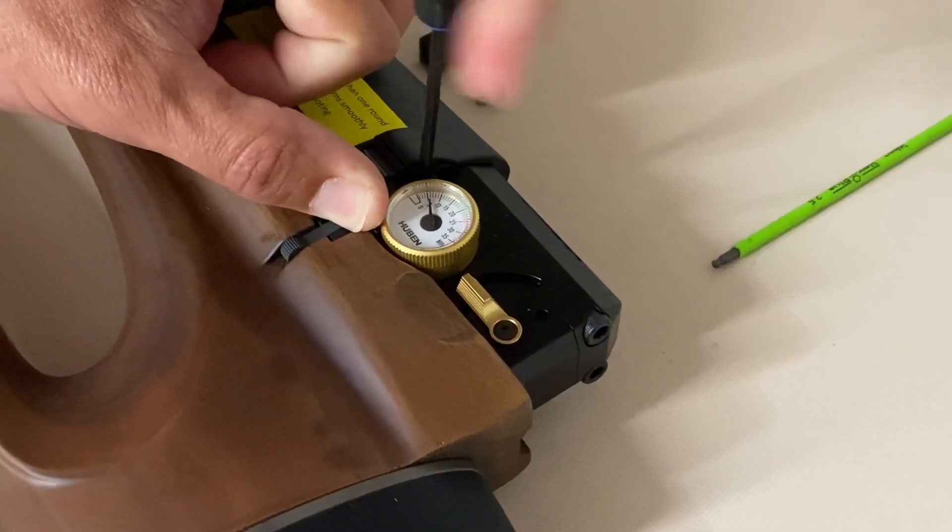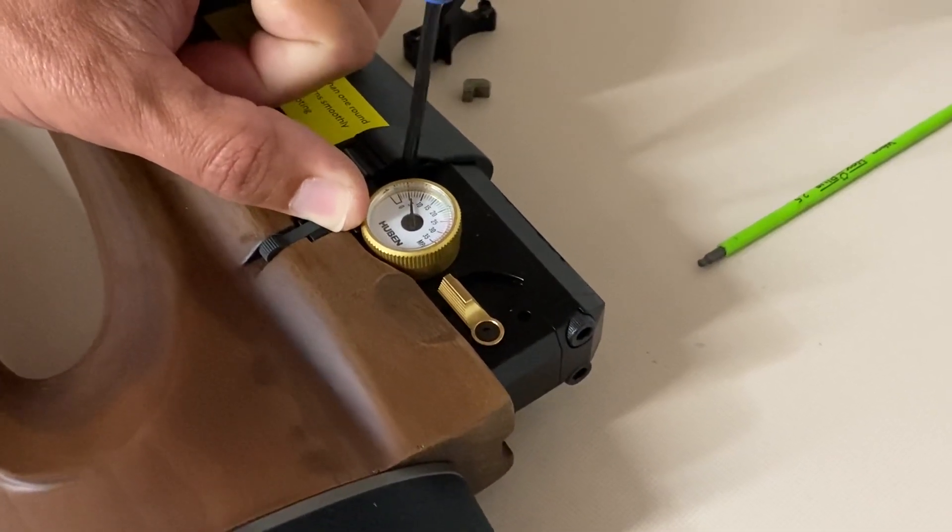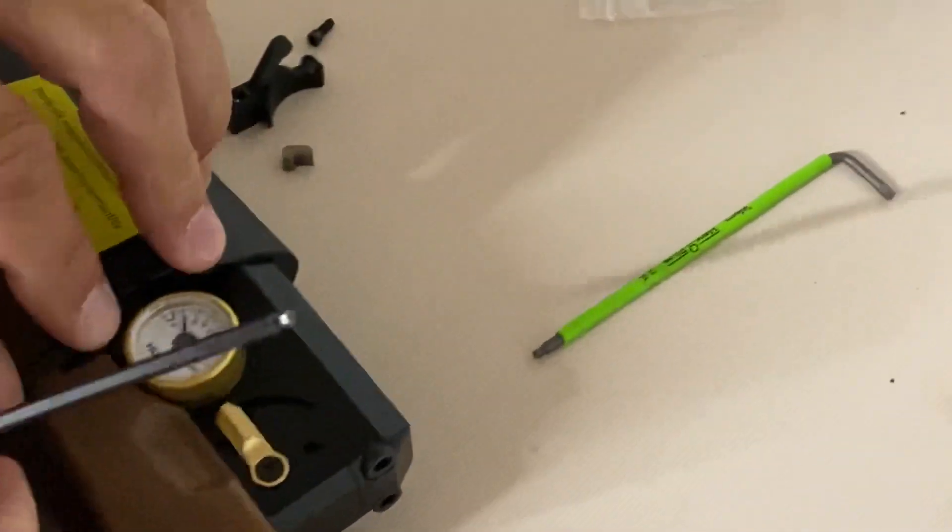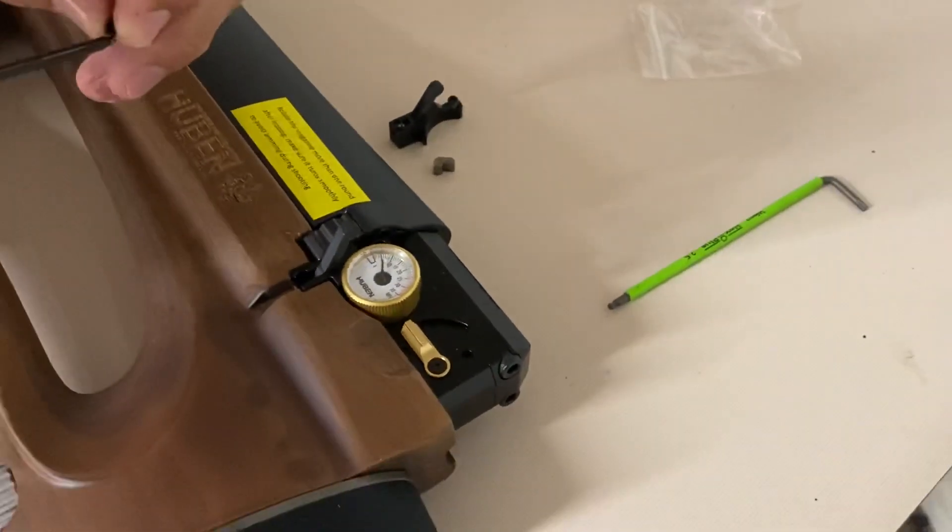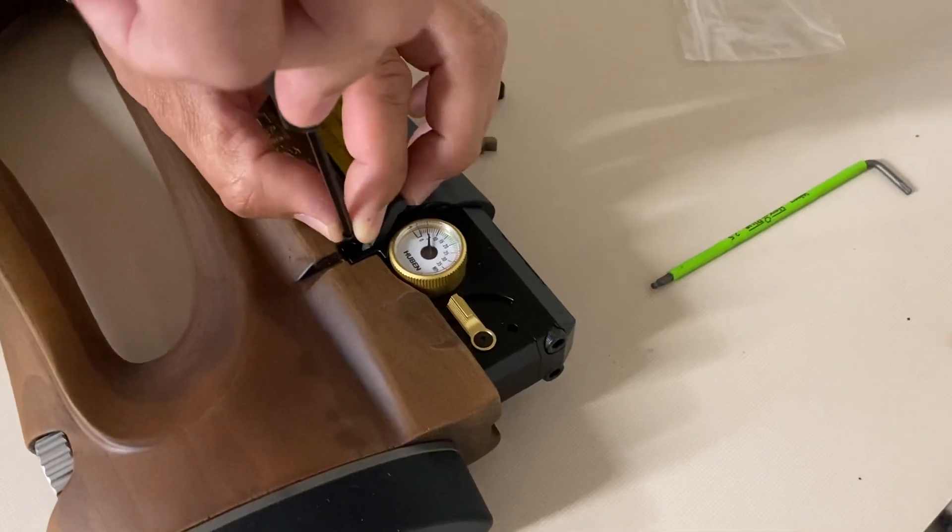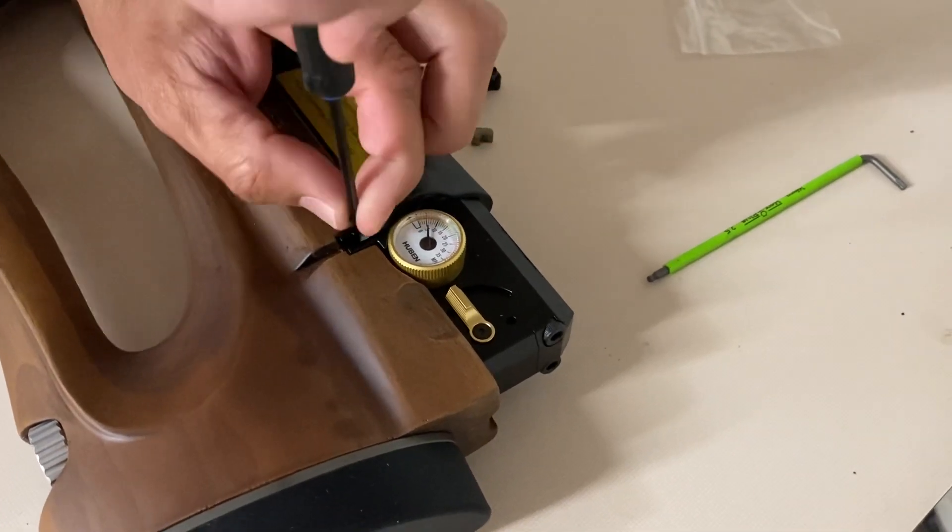So see, I'm threading this one almost all the way in, leave it just a little bit loose at the end. Then lift up your lever and get your second screw.